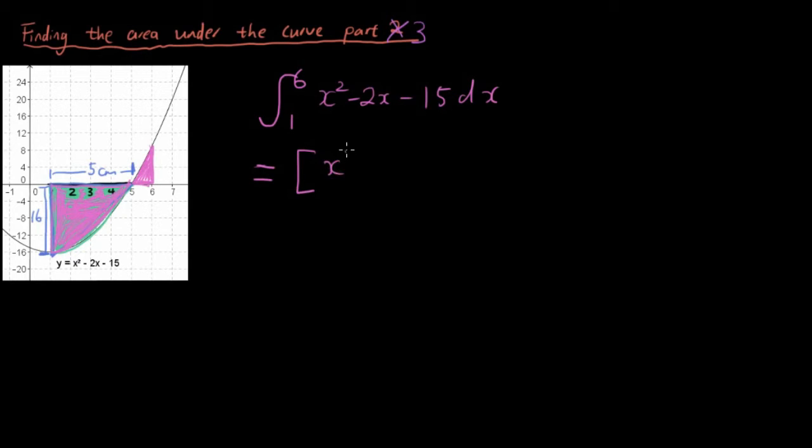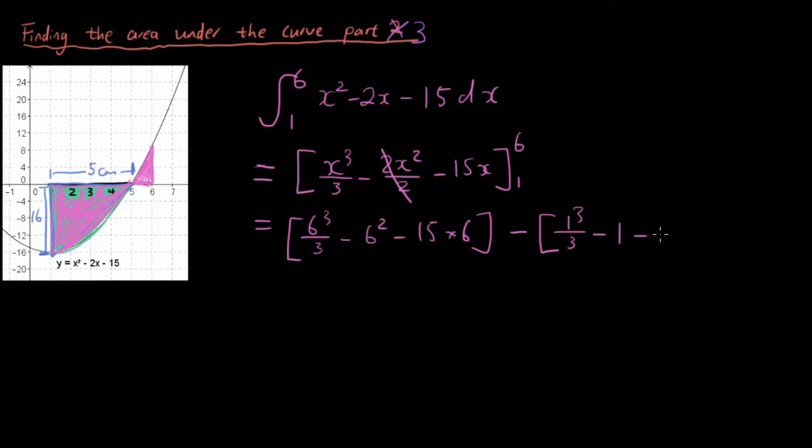Now let's try to find the definite integral from 1 to 6 of this equation. So this becomes x³/3 - 2x²/2 - 15x between 1 to 6. Now let's substitute the number 6 into it first: 6³/3 minus—actually 2 divided by 2 cancel each other out—6² - 15 times 6.